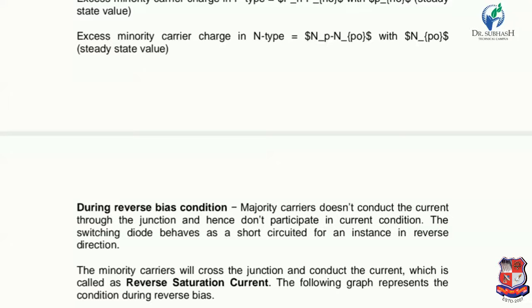During reverse bias condition, majority carriers do not conduct current through the junction and hence do not participate in current conduction. We already know from the fundamentals of the diode that in forward bias, majority charge carrier flow occurs and current flows; in reverse bias, majority charge carriers cannot move and therefore do not participate in the current conduction process. The switching diode behaves as a short circuit for an instant in reverse condition.